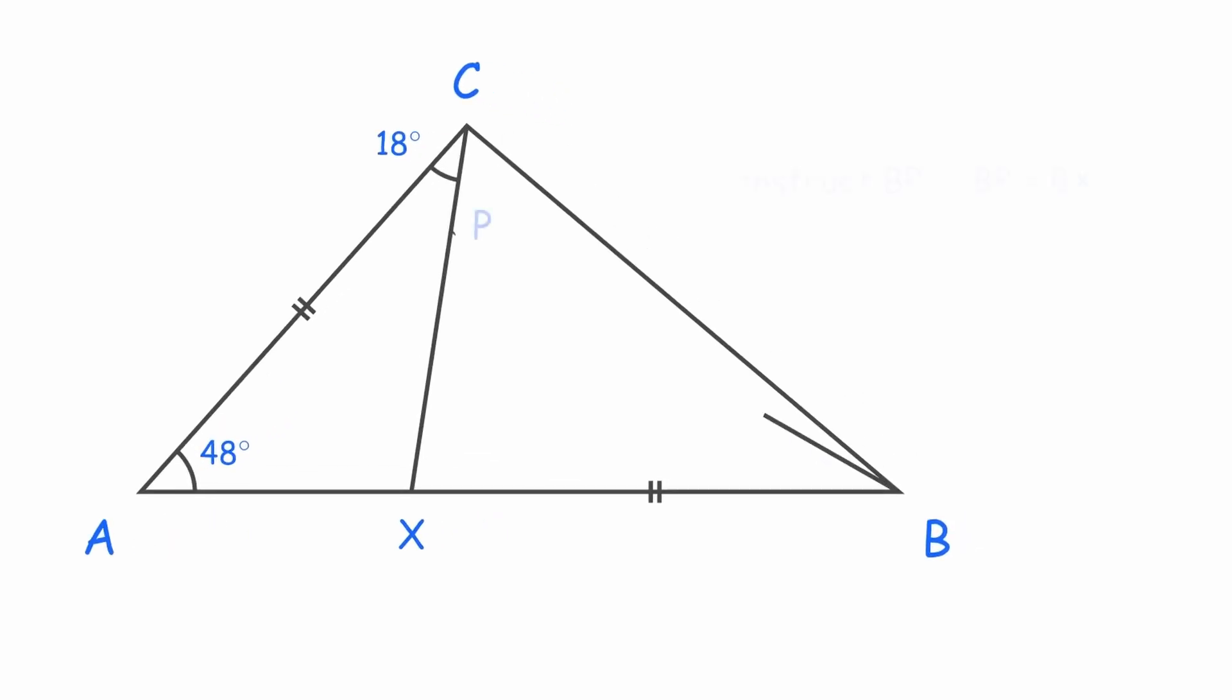Let's draw a line BP such that P lies on line CX and BP equals BX. It's possible that point P lies outside triangle ABC. No worries, the logic still works.